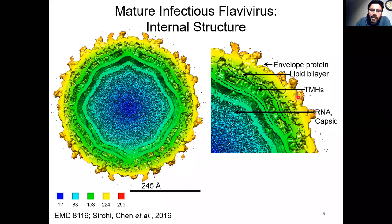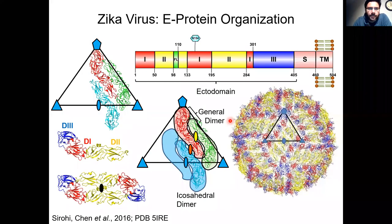Shown here is a cross section through a mature infectious flavivirus particle. The outermost layer consists of the envelope protein. Lying directly underneath this layer is an internal lipid membrane layer whose head groups are highlighted with broken black lines. The innermost layer of the virus, shown in blue, consists of the viral RNA genome and the capsid protein. Each asymmetric unit contains three copies of the E-protein, and although these three copies are present in very different chemical environments, their sequences are identical to each other.